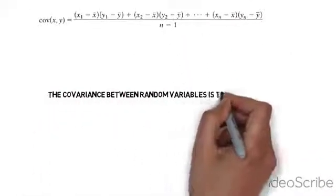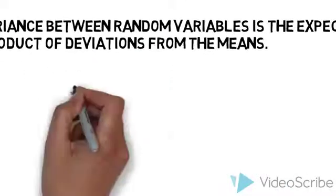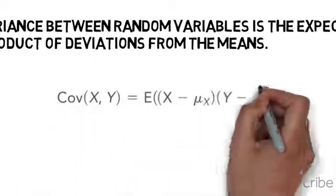In order to find the covariance between random variables, we use the expected value of the product of deviations from the mean.